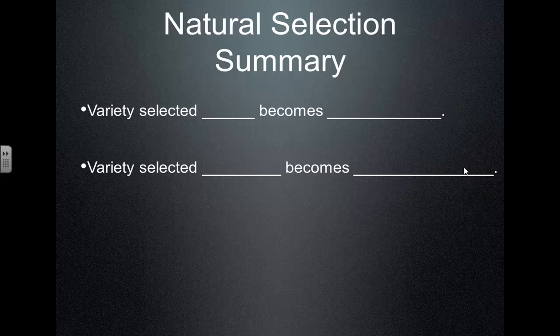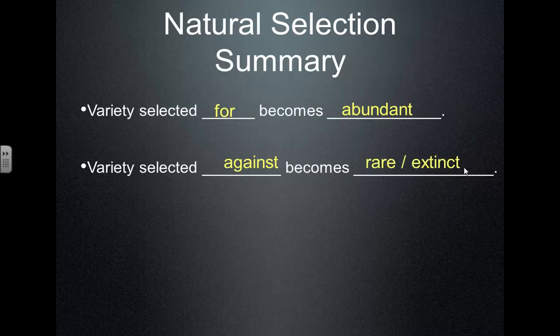In summary, any variation that's helpful in some way to survival or to reproduction will become more common and abundant. Any variation that's harmful or decreases survival or reproduction will become rare or eventually extinct.